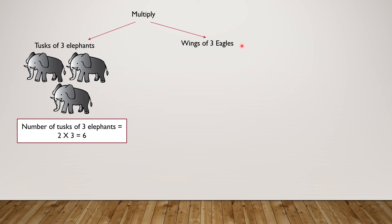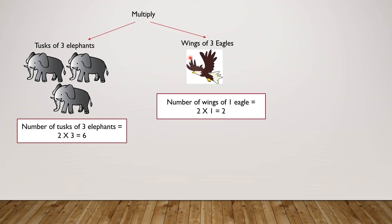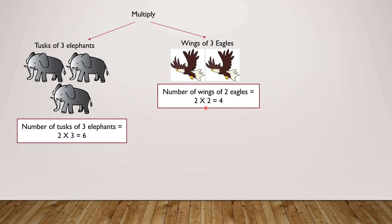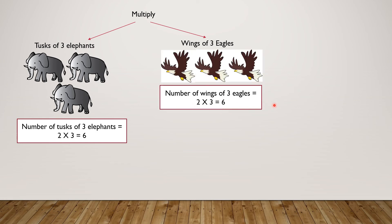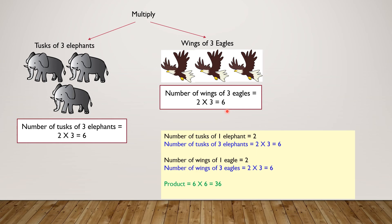But how many wings are there on three eagles? The number of wings on one eagle is two. On two eagles, it is four. On three eagles, it is six. So: number of tusks on one elephant is two. The number of tusks on three elephants is two times three, which is six. The number of wings of one eagle equals two. The number of wings of three eagles equals two times three, which is six. So the product will be six times six, which is thirty-six.